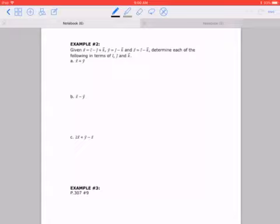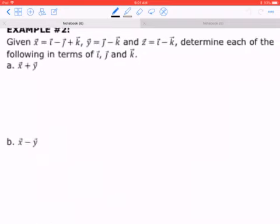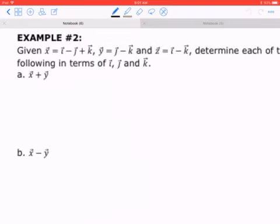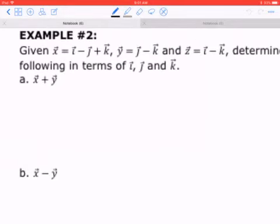Let's keep going. Example number two. Given x equals i minus j plus k, y equals j minus k, and z equal to i minus k, determine each of the following in terms of i, j, and k. So, step one. x plus y equals i minus j plus k plus j minus k.